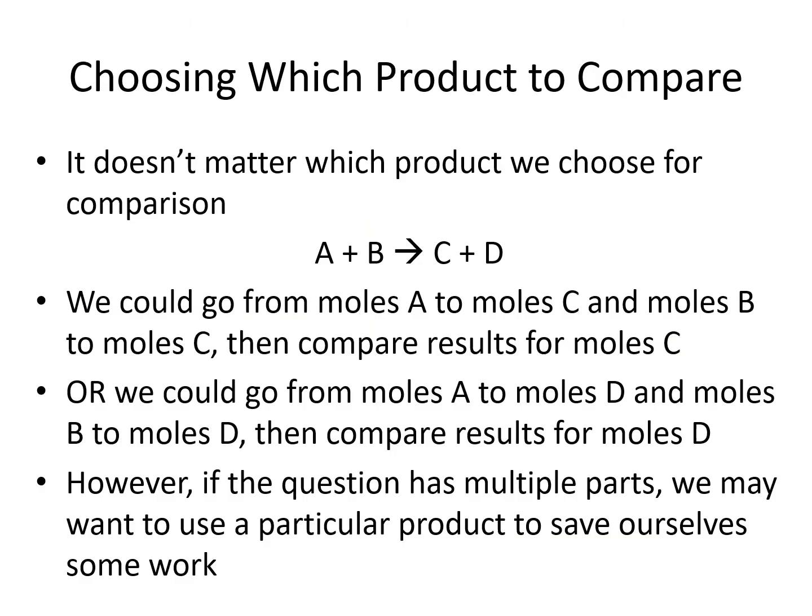When there are multiple products, it doesn't matter which one we use for comparison. We can compare amounts of any of the products as long as we're consistent. We could go from moles of A to moles of C, and moles of B to moles of C, and compare the amounts of C — whichever yields the lowest amount would be the limiting reactant. But if the question has multiple parts, we might want to use a particular product to save ourselves some work. If one part asks how many grams of C are formed, we should probably use C for our comparison.